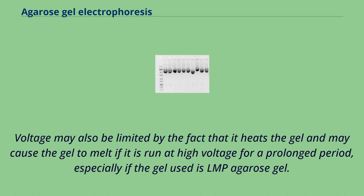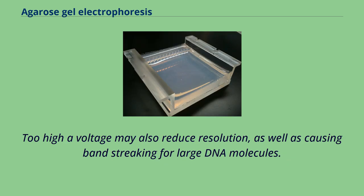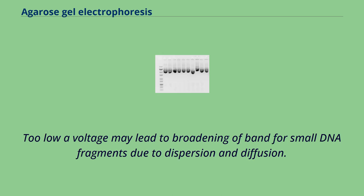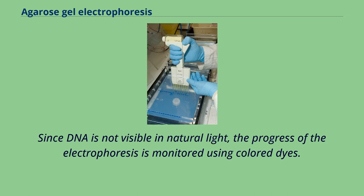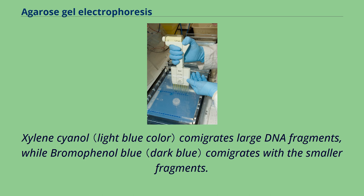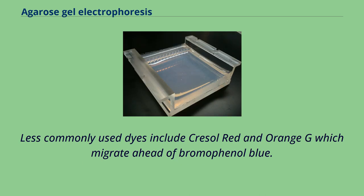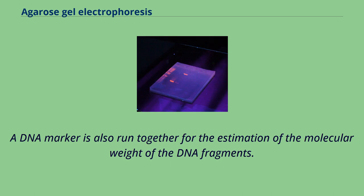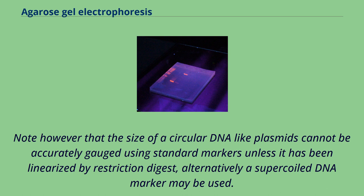Too high a voltage may reduce resolution and cause band streaking for large DNA molecules. Too low a voltage may lead to broadening of bands for small DNA fragments due to dispersion and diffusion. Since DNA is not visible in natural light, progress of electrophoresis is monitored using colored dyes — xylene cyanol comigrates with large DNA fragments while bromophenol blue comigrates with smaller fragments. A DNA marker is also run for estimation of molecular weight of DNA fragments. The size of circular DNA like plasmids cannot be accurately gauged using standard markers unless linearized by restriction digest; alternatively a supercoiled DNA marker may be used.